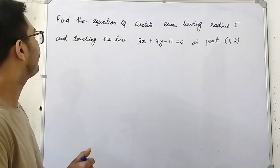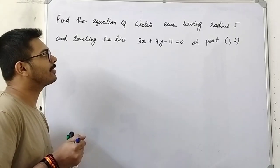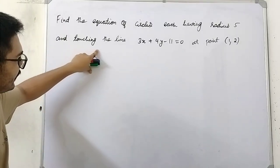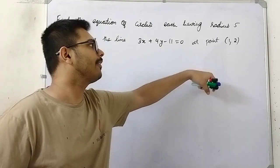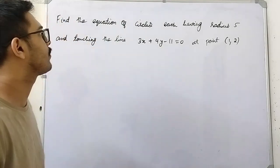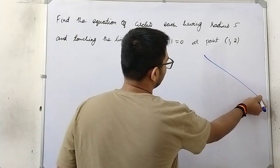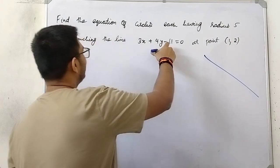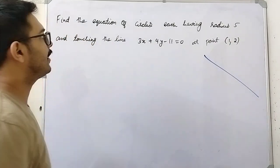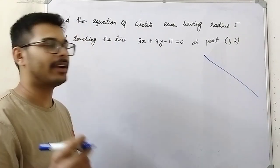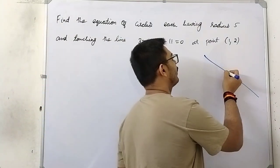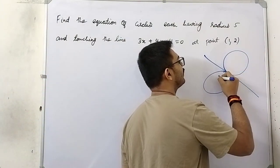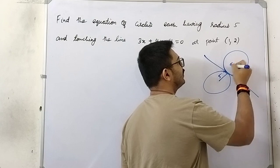Let us solve this question: find the equation of circles each having radius 5 and touching the line at the point (1,2). We have a line whose equation is given, and this line is touching the circle, meaning the line is a common tangent to both circles. These two circles each have a radius of 5 units — that is the condition.